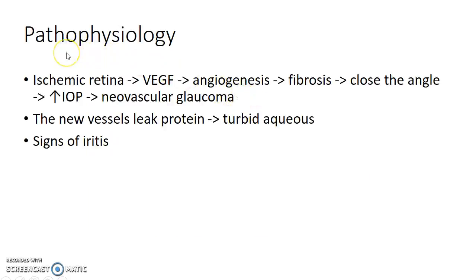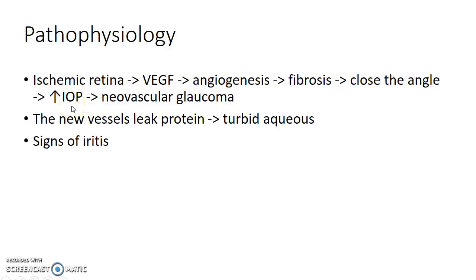Coming to the pathophysiology: ischemic retina leads to the release of vascular endothelial growth factor (VEGF), which leads to the formation of new abnormal blood vessels in a process called angiogenesis. These new abnormal blood vessels undergo fibrosis, closing the angle of the anterior chamber, causing a rise in intraocular pressure and leading to a condition called neovascular glaucoma.